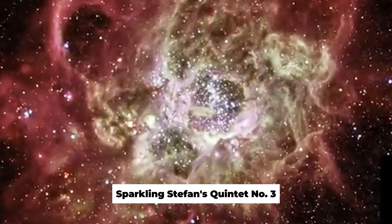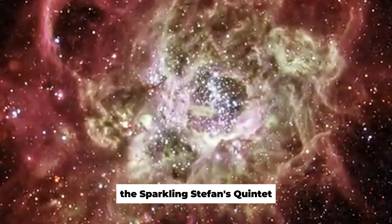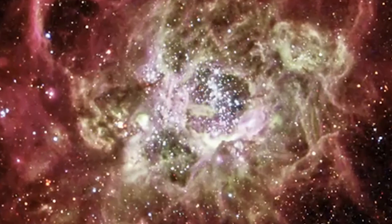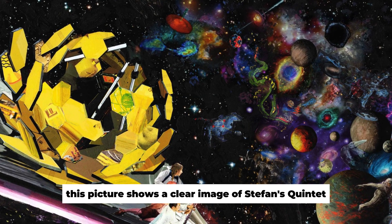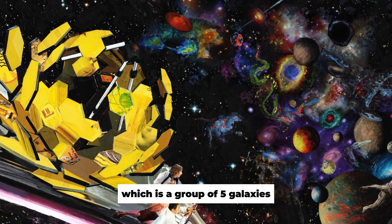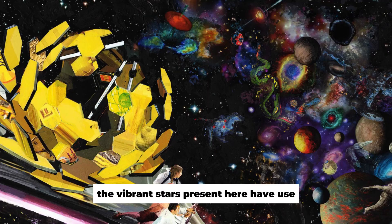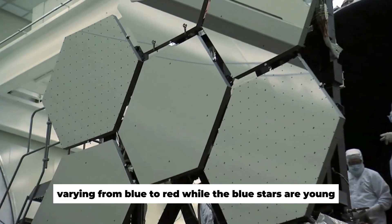Number 3: The Sparkling Stefan's Quintet. This picture shows a clear image of Stefan's Quintet, which is a group of five galaxies. The vibrant stars present here have hues varying from blue to red.